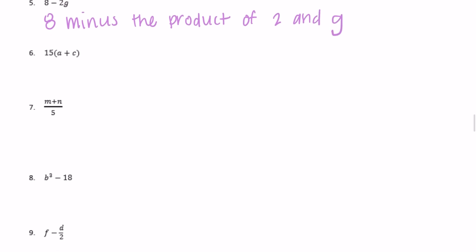15 times a plus c. 15 times a plus c, or we could say 15 times, we need to keep a and c together so I need to say the quantity. We could say 15 multiplied by the quantity a plus c.